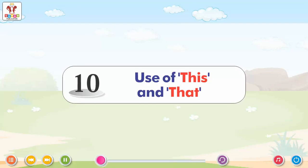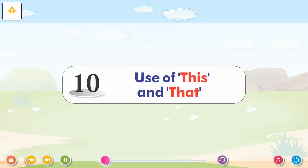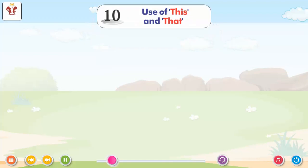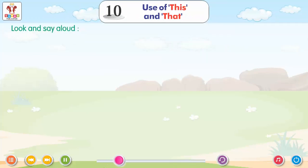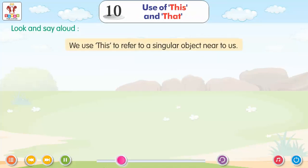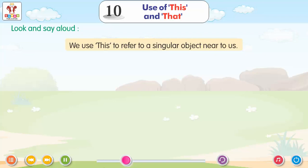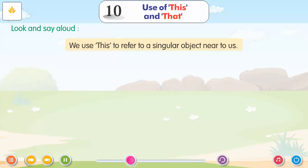Chapter 10: Use of This and That. Look and say aloud. We use 'this' to refer to a singular object near to us.